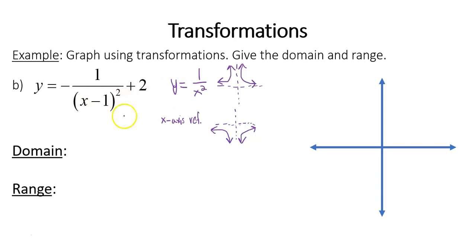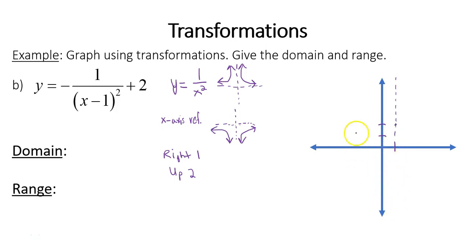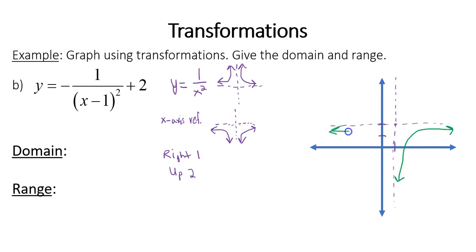Considering the asymptotes on the axes in the parent function, if your curves are in the top right and top left region, they will be reflected to the bottom left and bottom right region — this is an x-axis reflection. Additionally, we have a minus 1 with x, so we shift right 1, and a plus 2 at the end means up 2. Starting from 0, 0, we go right 1 and up 2 — that's the new intersection point of the asymptotes. The curves belong in the bottom right and bottom left regions, hugging the asymptotes.